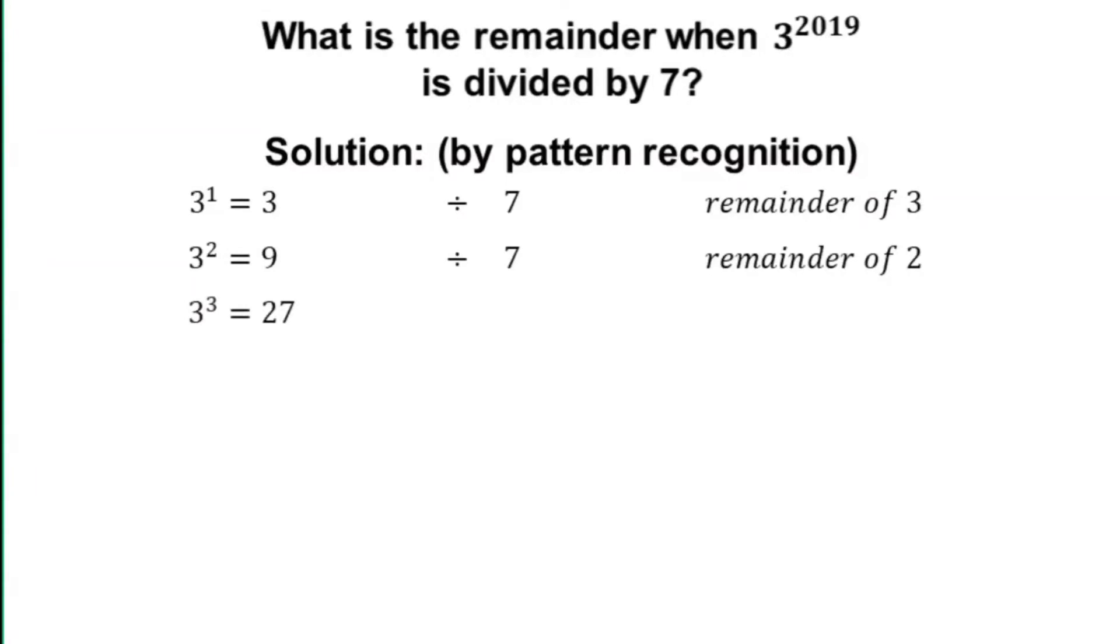3 to the power of 3 equals 27, which divided by 7 leaves a remainder of 6. 3 to the power of 4 equals 81, which divided by 7 leaves a remainder of 4.